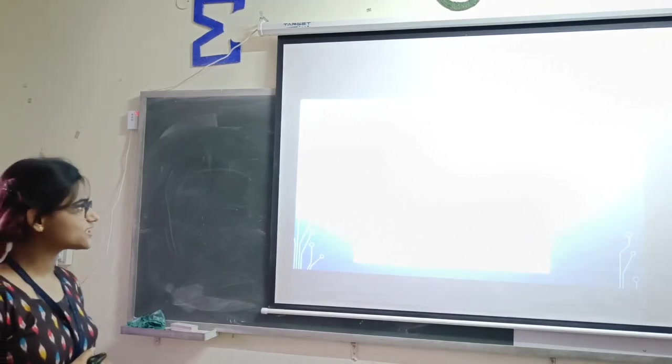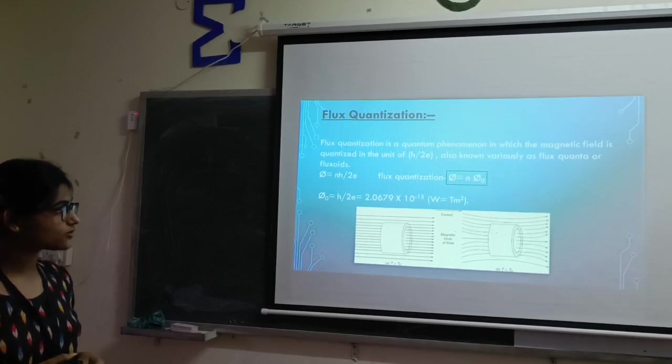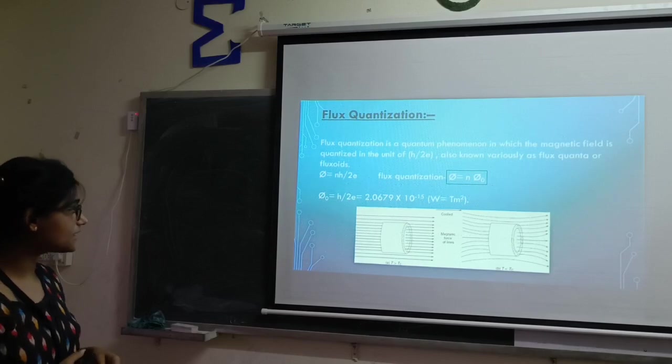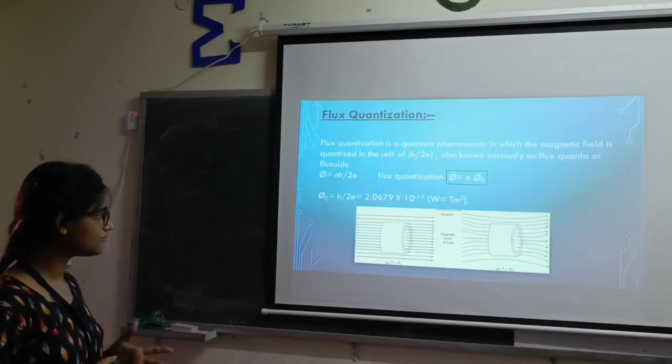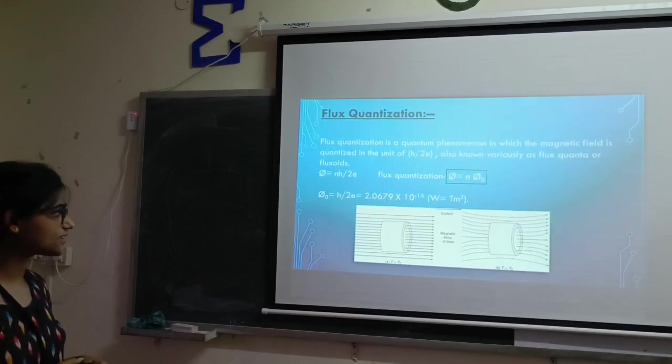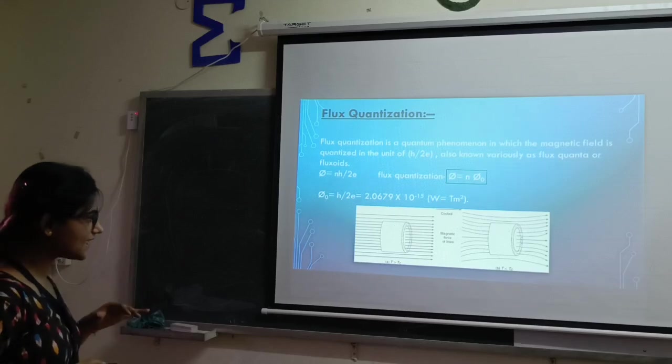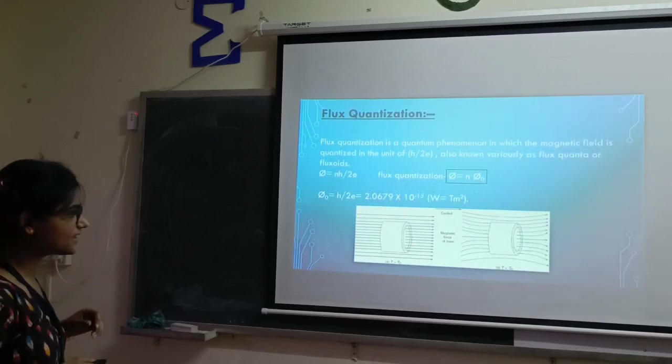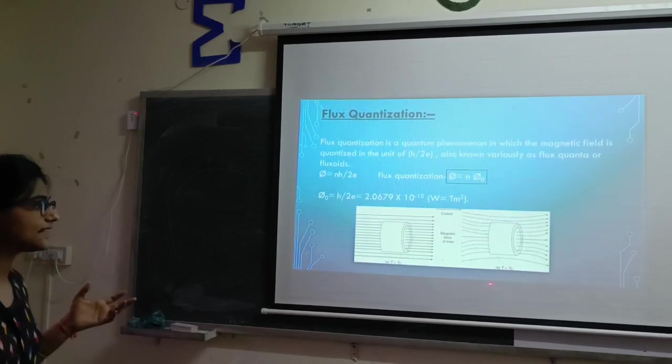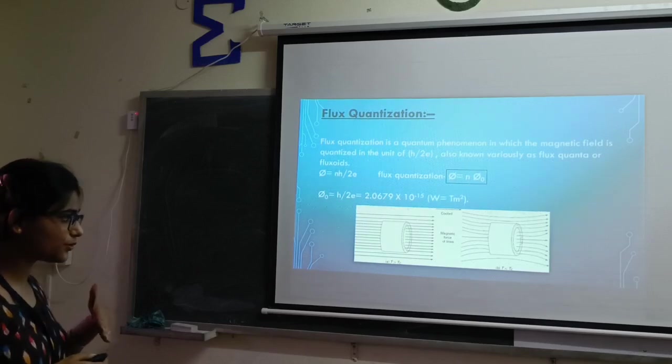Flux quantization. Flux quantization is a quantum phenomenon in which the magnetic field is quantized in the unit of h by 2e, also known as flux quanta or fluxon. Flux quantization equals phi equal to integral multiple of phi nought. Phi nought is h by 2e which is equal to 2.0679 into 10 to the minus 15 weber. If we place a metallic ring in the magnetic field, the magnetic lines of force pass through it when the temperature is greater than critical temperature. But when the temperature is less than critical temperature, it does not allow the magnetic lines of force to pass through it.